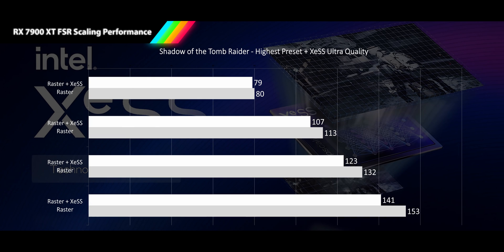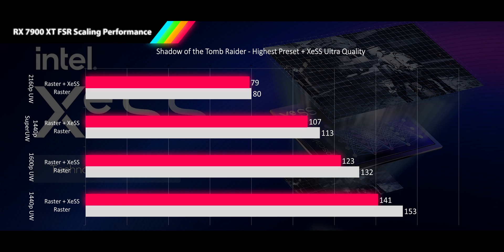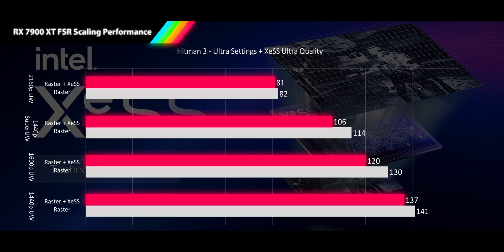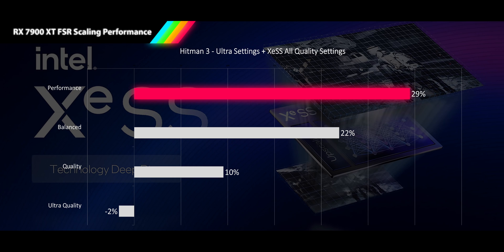Finally, let's see what Intel has been up to with XeSS. Unfortunately, we see negative scaling across the board in Shadows of the Tomb Raider. Hitman 3 is just as bad. Looking at more performant modes, the performance mode provides a 29% improvement — but that's actually 6% lower than quality mode on FSR. The evidence is pretty clear: everyone should avoid XeSS unless you're on an Intel card.